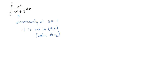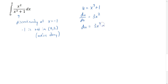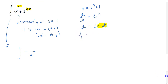We have a numerator and denominator; the denominator is more complicated, so let's substitute for that. I'll let u be the denominator, x cubed plus 1. The derivative of this is 3x squared, so du equals 3x squared dx. Rewriting the integral: my denominator becomes u, and I also have x squared dx in my integrand. Multiplying both sides of du = 3x squared dx by one-third shows that x squared dx equals one-third du. So I replace x squared dx with one-third du.